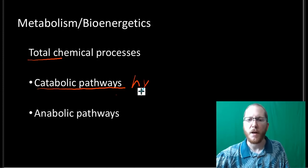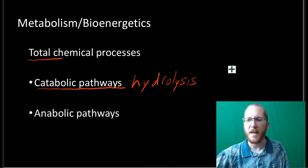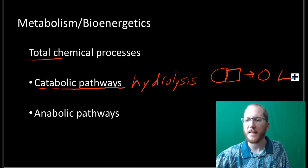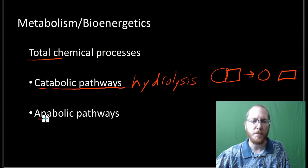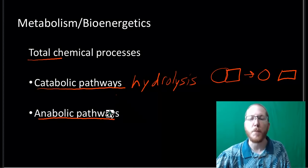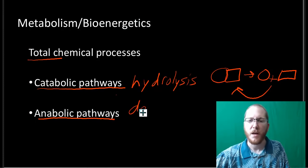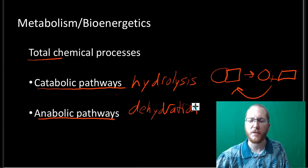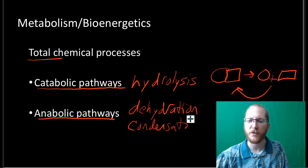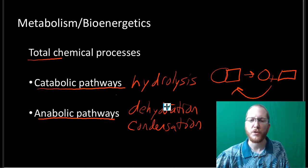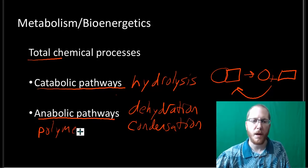Catabolic pathways follow along with the hydrolysis idea, where you take something and break it into two separate pieces. With anabolic pathways, these are going to be building pathways — that's why anabolic steroids make you build muscle. You would not want to take catabolic steroids if you want to be stronger. Anabolic pathways do the exact opposite; they fall into dehydration reactions, or dehydration synthesis — sometimes also called condensation reactions. These are going to be building stuff, getting you more towards the polymer idea, whereas catabolic gets you more towards the monomer.